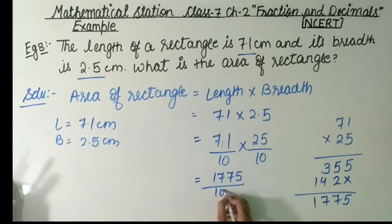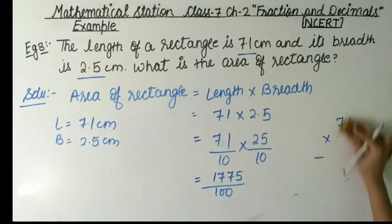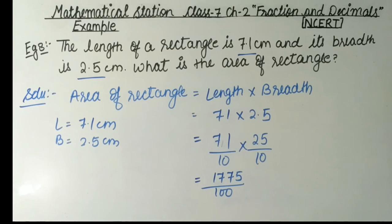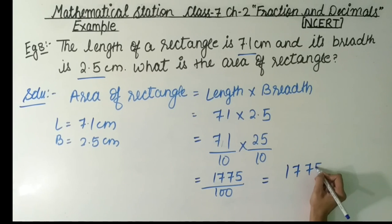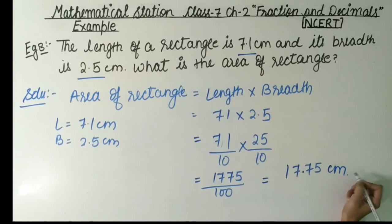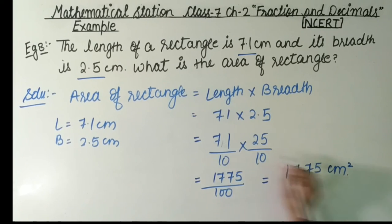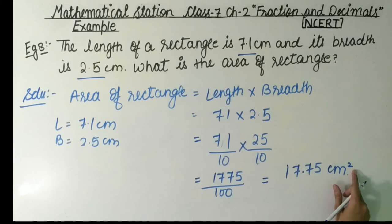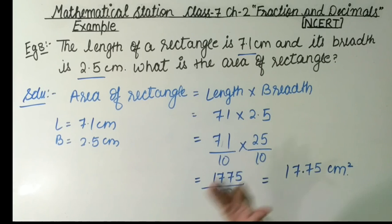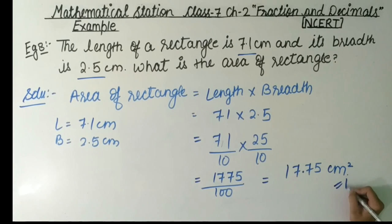We multiply 10 by 10 to get 100 as the denominator. So we have 1,775 upon 100. Now we place the decimal point by counting 2 places from the right — giving us 17.75. Since we multiplied two lengths in cm, the unit becomes cm². The area of this rectangle is 17.75 cm².